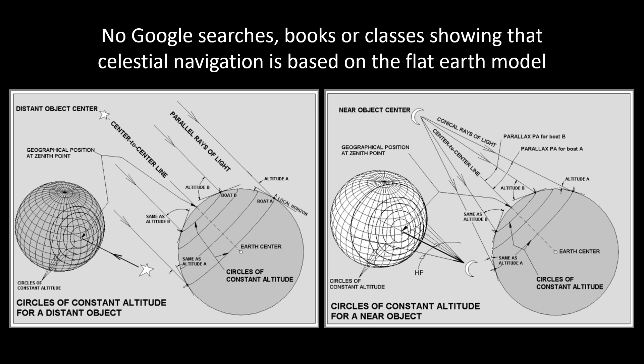And just out of curiosity, how come there's no Google searches, books, or classes showing that celestial navigation is based on the flat earth model? Everything that I have seen always shows that it is based on a globe.